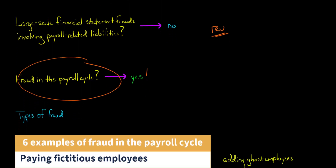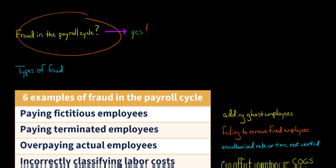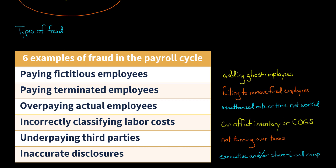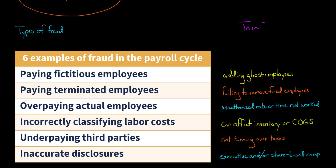I want to give you a few examples of the types of fraud you might see in the payroll cycle, and then we'll talk about these more in the videos to come. Let's start with fictitious employees. If you have a dishonest person who works in your payroll department, they could potentially add a fictitious employee, otherwise known as a ghost employee, to the payroll. So let's say they add someone named Tom Smith to the company's payroll.